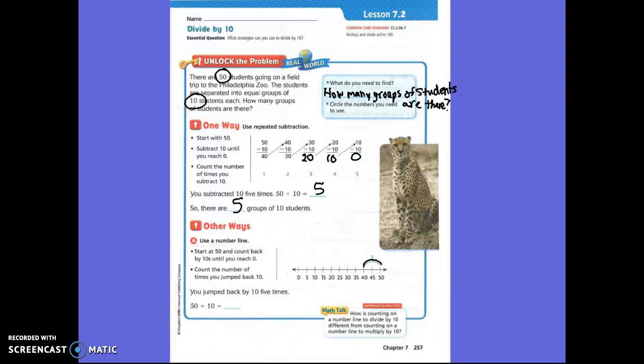Jump back ten more, which would be? Thirty. Jump back ten more, which would be? Ten more would be? Ten. And ten more would be? Zero. And how many jumps did we have, guys? Five. Five jumps. So, fifty divided by ten is? Five.